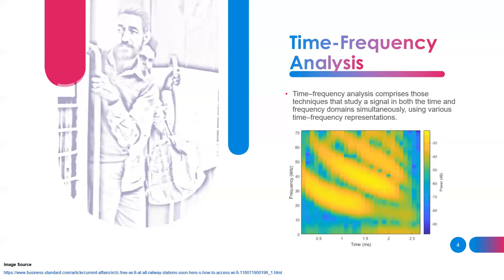Usually, most of you have seen these kinds of images where you have the time domain and the frequency domain — time on the x-axis, frequency on the y-axis, and the different colors as a representation of the power. This is basically what you feed to deep neural networks when training them based on signals. So let's have a closer look.